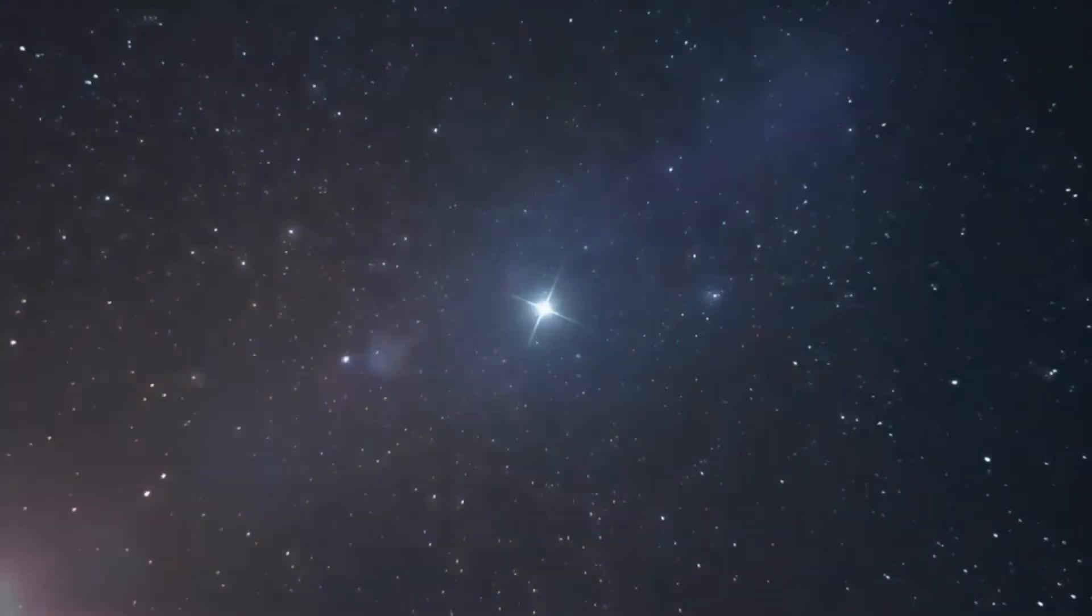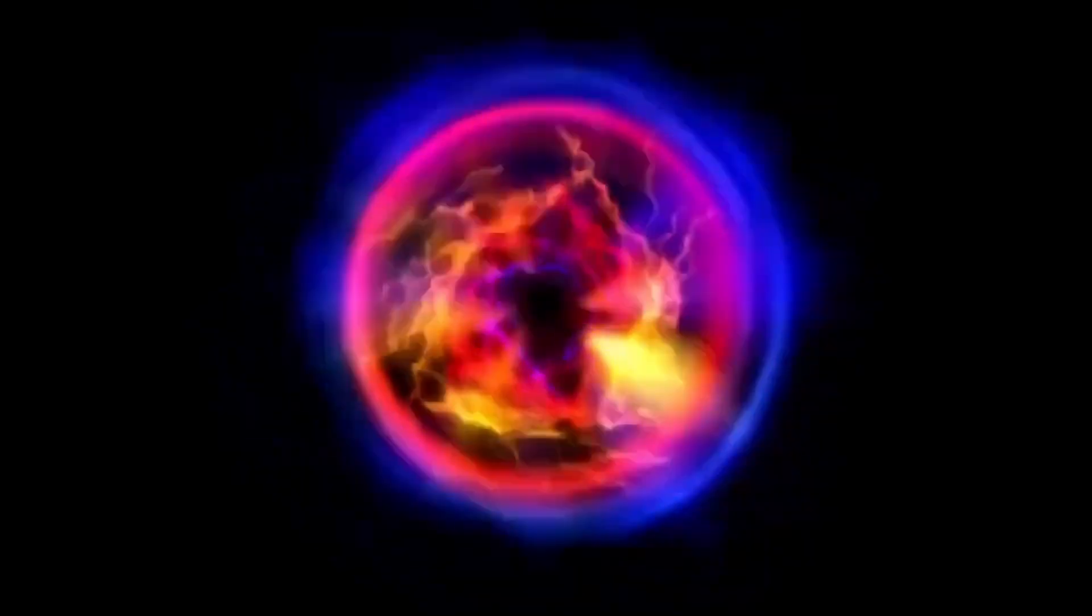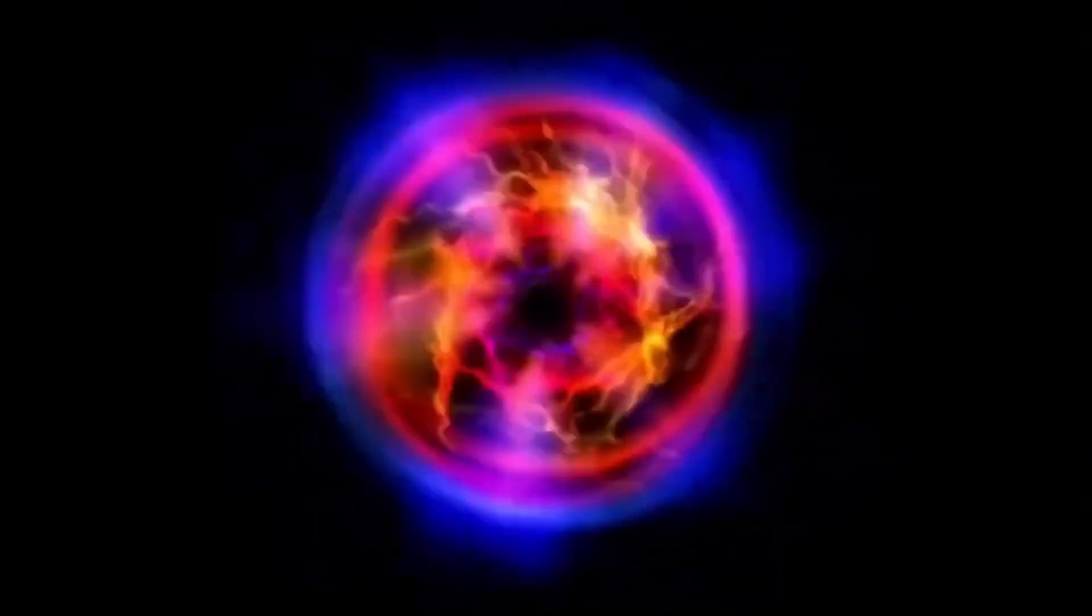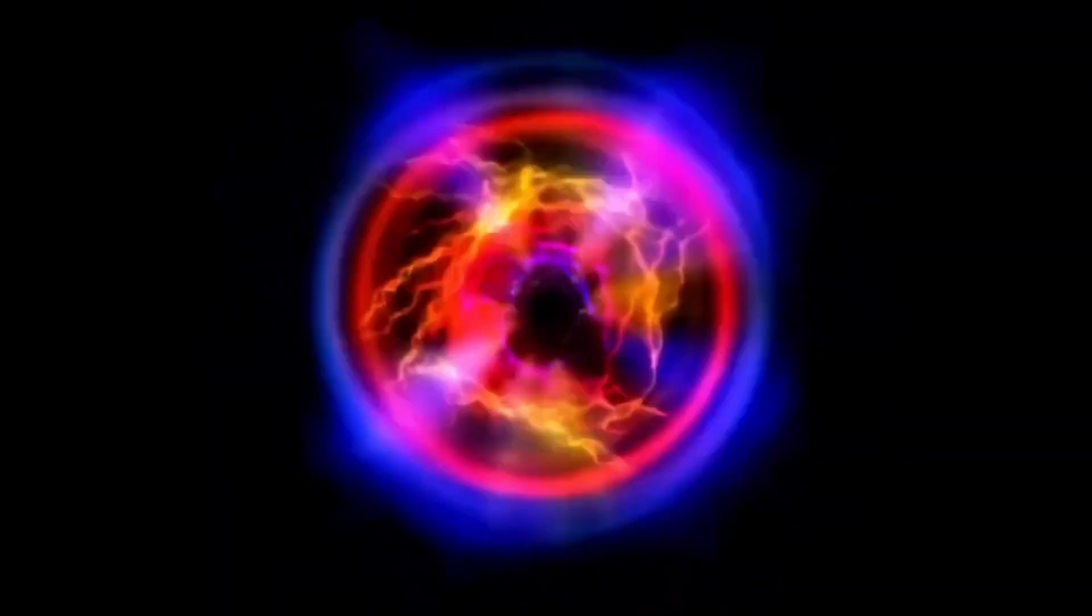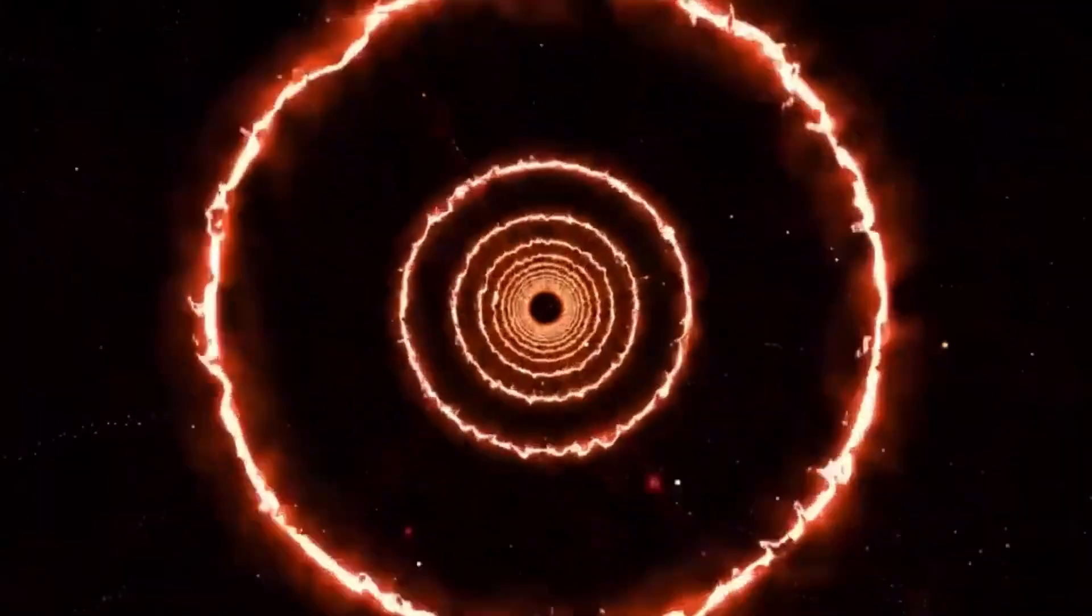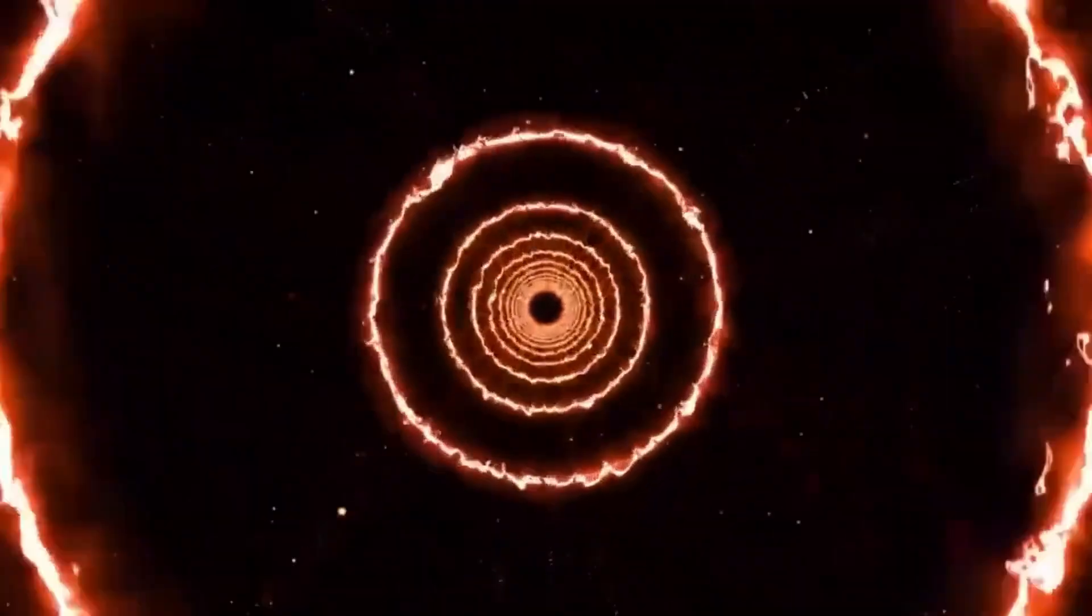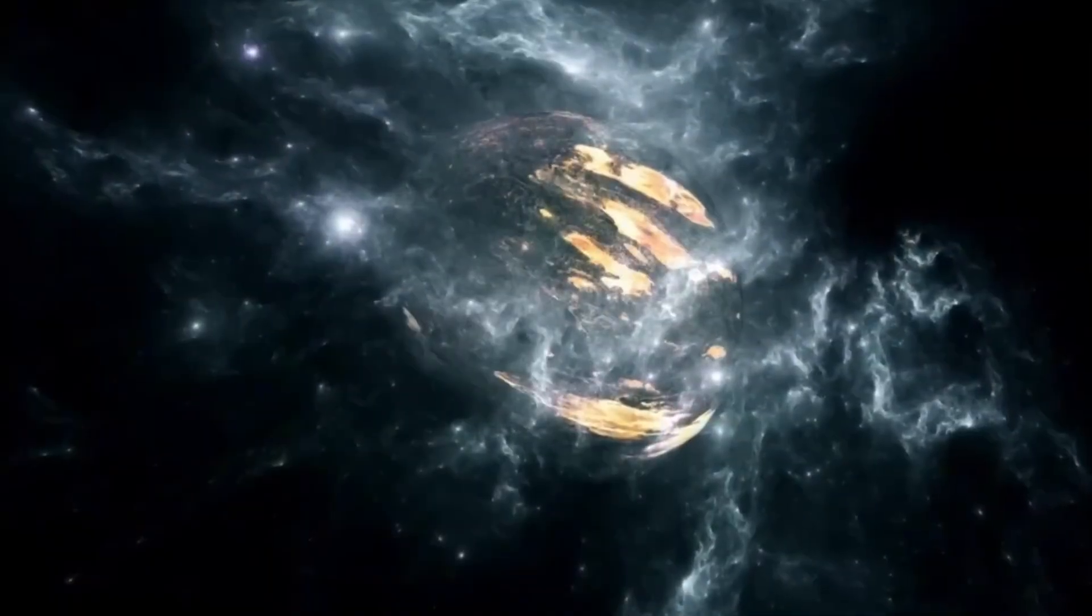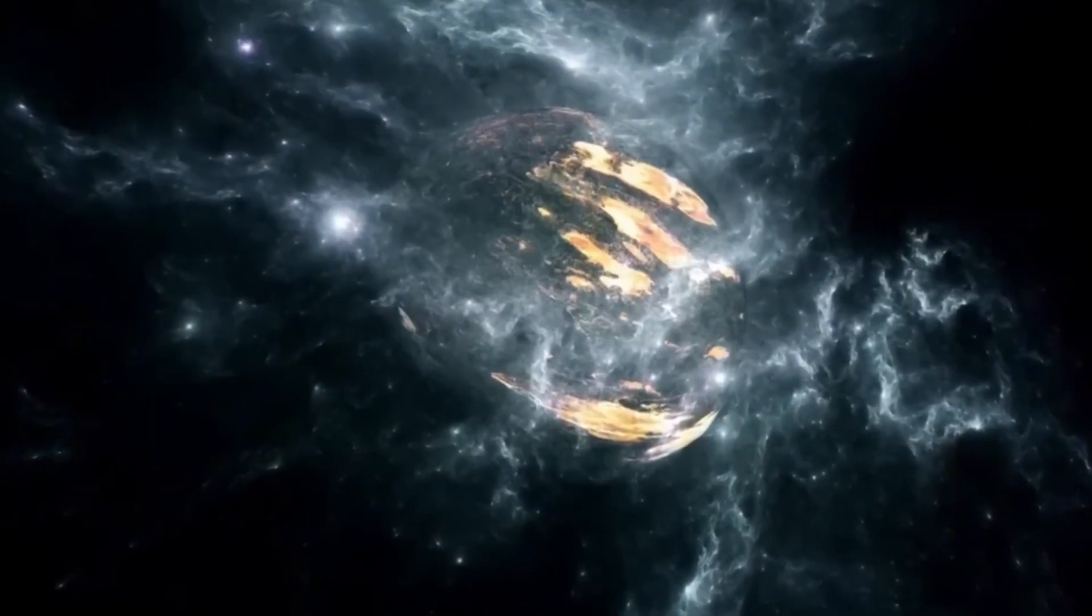A fascinating process that occurs inside stars like Betelgeuse is stellar convection. Energy generated in the core moves toward the surface, helping to balance internal processes with the star's external brightness. As hot matter in the core rises and cooler matter descends, convection currents form that transport energy to the outer layers.